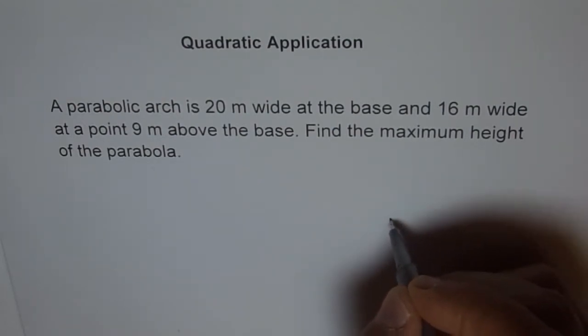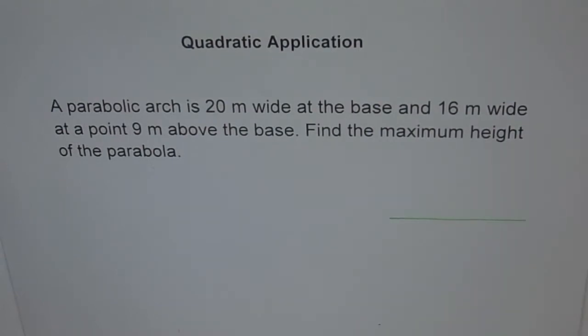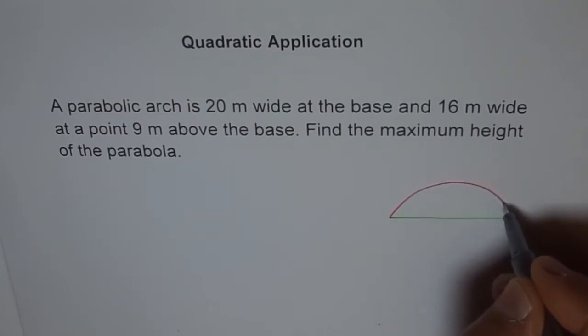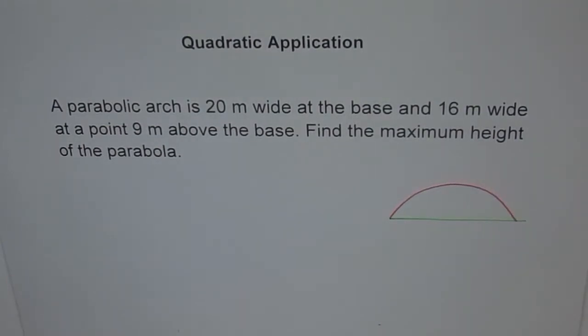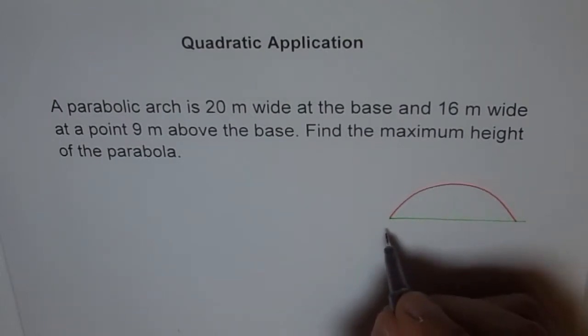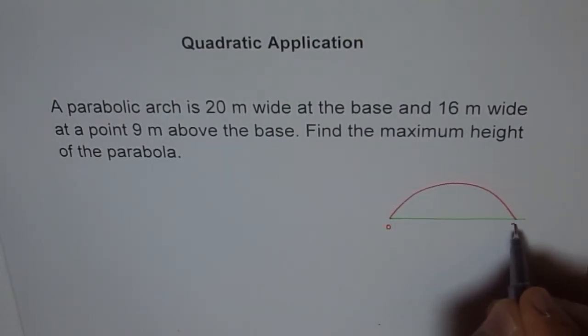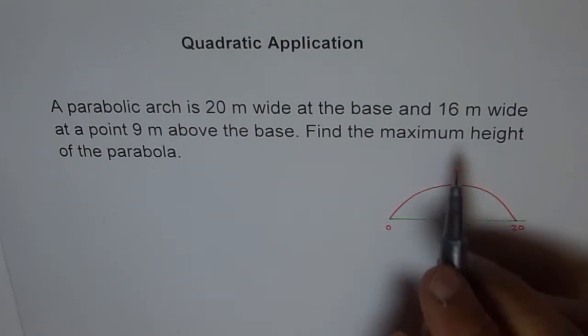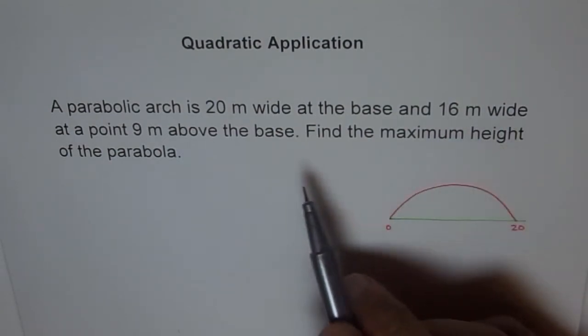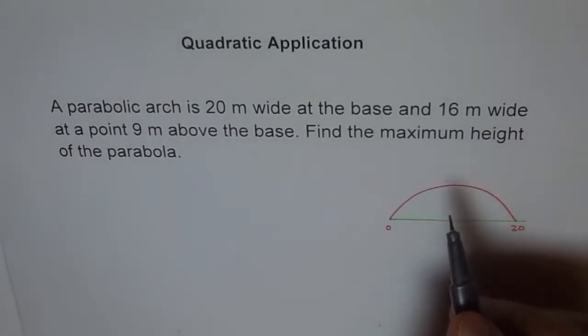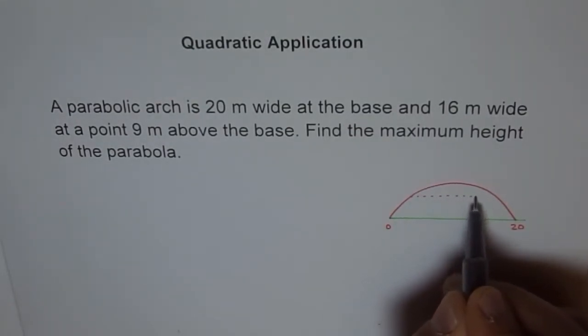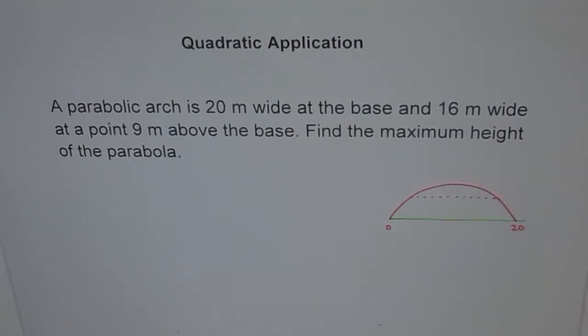Let's say this is kind of a parabola. Let me draw with red here. Let's say this is our parabola. Okay, so it says it is 20 meters wide. Let's say this is 0 and so this is 20. It is 20 meters wide at the base and 16 meters wide at a point 9 meters above the base. So let's say kind of like this.